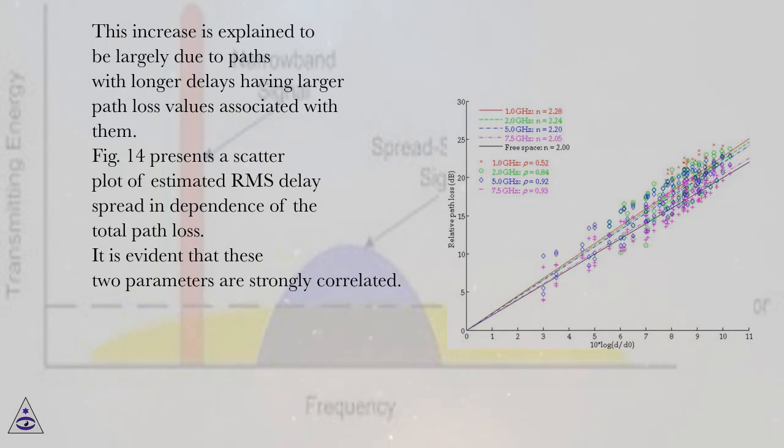Figure 14 presents a scatter plot of estimated RMS delay spread in dependence of the total path loss. It is evident that these two parameters are strongly correlated.